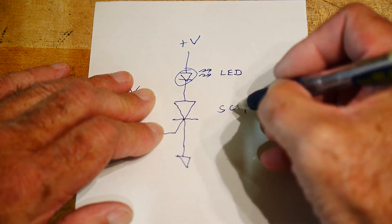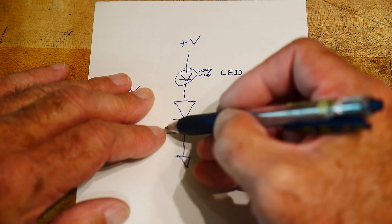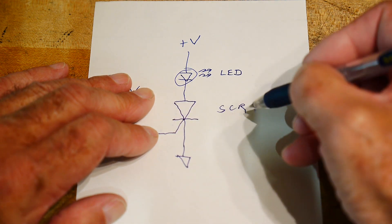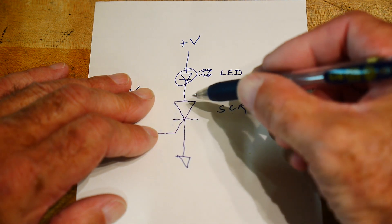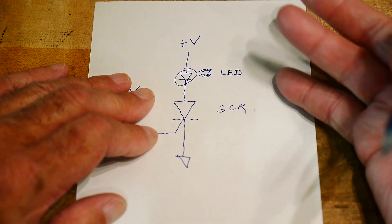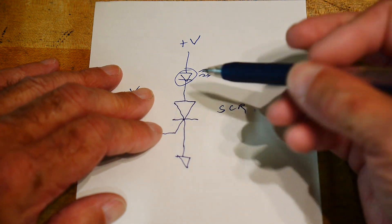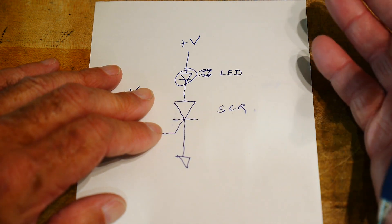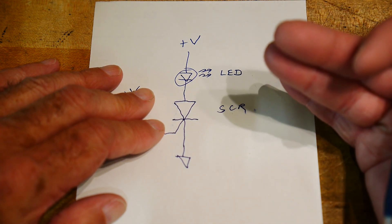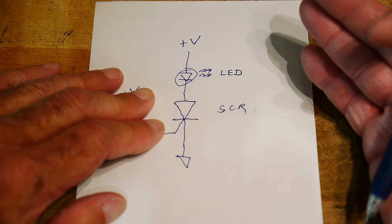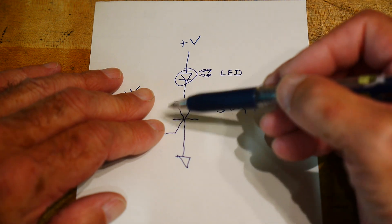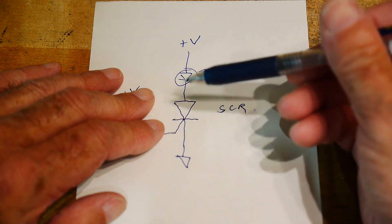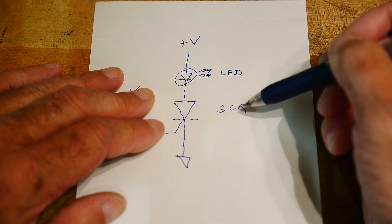So silicon, because it's made out of silicon, controlled because it's got this funny other wire sticking off to the side, and rectifier. So we're able to control this diode. Now what does controlling a diode mean? It means being able to turn the diode on and off, which is kind of strange. Isn't that kind of what a transistor does? But it is in this case a diode.